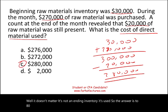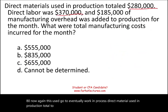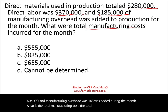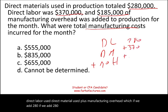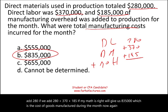Direct material used in production totals $280,000. Direct labor was $370,000 and manufacturing overhead was $185,000 added during the month. Total manufacturing cost includes direct material used, plus direct labor, plus manufacturing overhead: $280,000 plus $370,000 plus $185,000 equals $835,000 — the total manufacturing cost incurred during the month. This amount goes to work in process, and from work in process some will end up in finished goods.